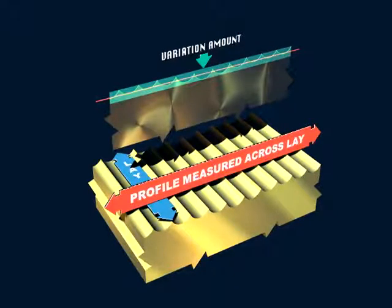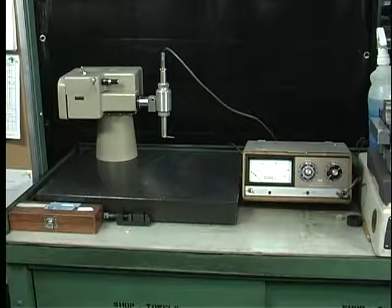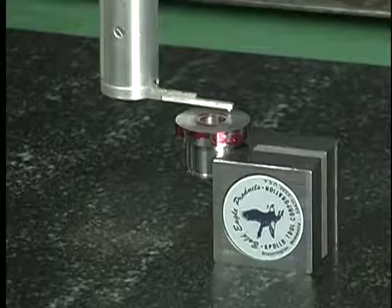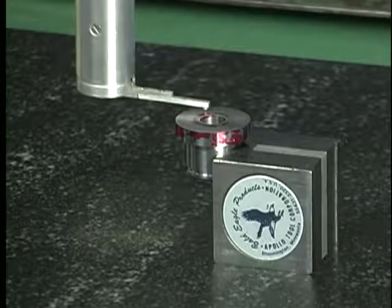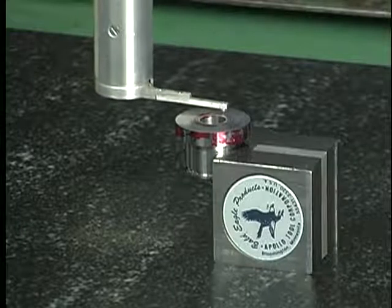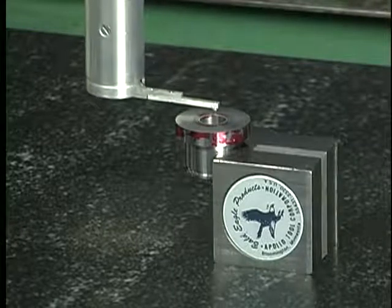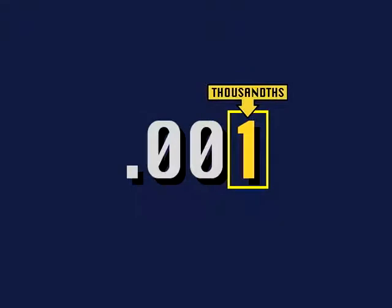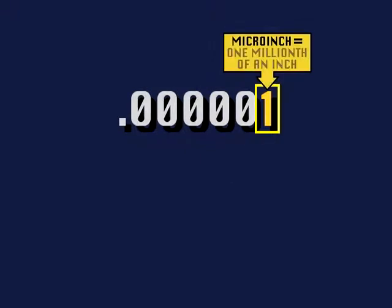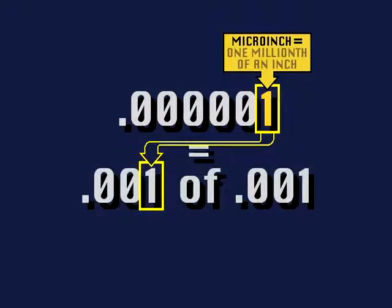Notice that the profile is measured across the lay pattern. The measured profile is obtained by the use of instruments such as a profilometer. Instead of taking a slice out of the workpiece, the profilometer has a needle point called a stylus, which is moved across the surface to measure the profile. One of the key units of measurement in the machining industry is the thousandth of an inch. Surface finish is measured in micro-inches. A micro-inch is one millionth of an inch — think of one micro-inch as one thousandth of one thousandth of an inch.